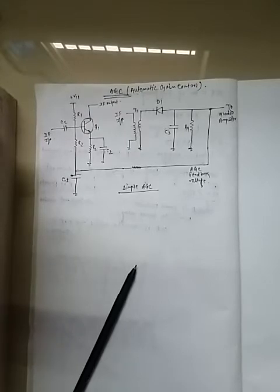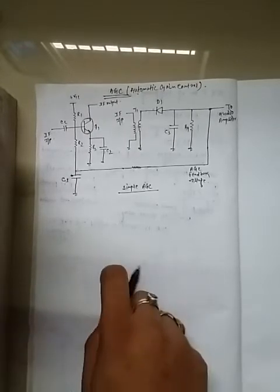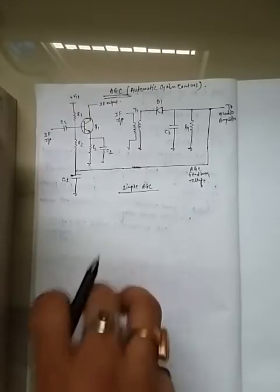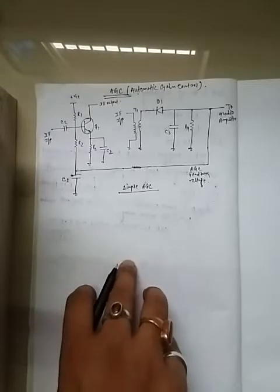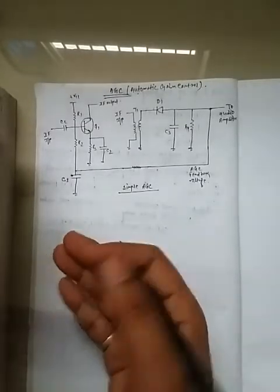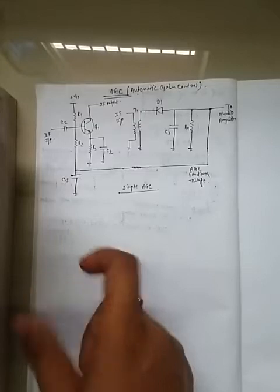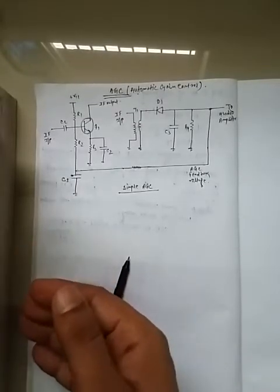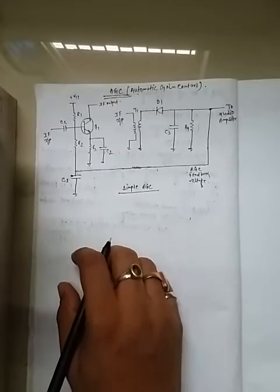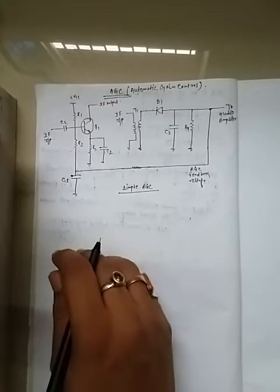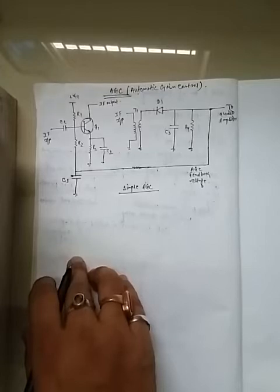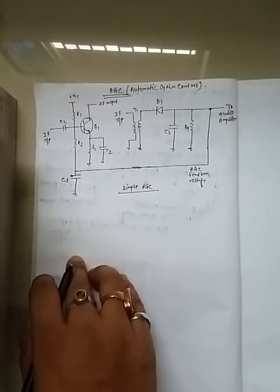When a strong signal is received, the gain is less. And when a weak signal is received, the gain is more. So the output is varied. When a high signal is received, gain is high, and when a low signal is received, gain is low. The AGC circuit maintains constant gain or constant output.